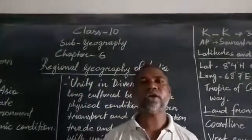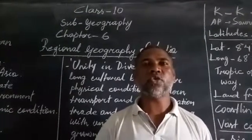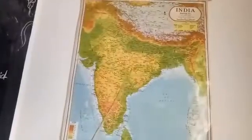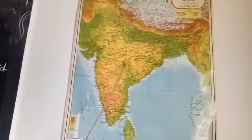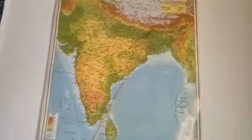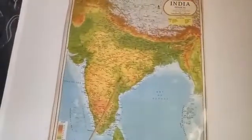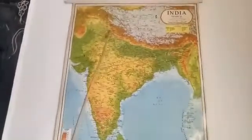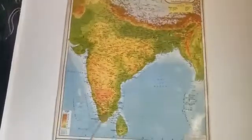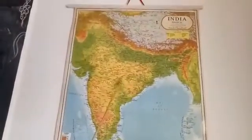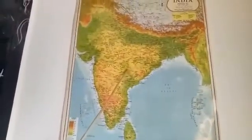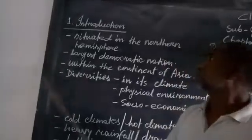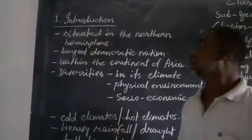Welcome, Class 10 students, to geography class. Chapter 6 — the topic is regional geography of India. This is the map of India where we see the neighboring countries as well as India. We have to know the size of India from north to south extension and east-west extension, and what kind of land features, climate, population, and everything India has — as an introduction.